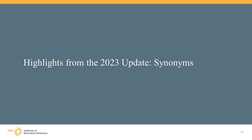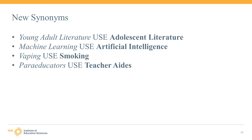If you've attended or listened to any of our previous webinars, you've probably heard me say that synonyms are my favorite terms in the thesaurus. Synonyms are like blazes on a trail or signs along the highway — they point the way to your destination. As part of every thesaurus update, we add synonyms to go along with the new descriptors we are adding, but we also add new synonyms for existing descriptors, to help improve indexing quality and to provide ERIC users with new access points to existing terms. In this update, for example, we added young adult literature as a synonym for adolescent literature, machine learning as a synonym of artificial intelligence, vaping as a synonym for smoking, and paraeducators as a synonym of teacher aids.